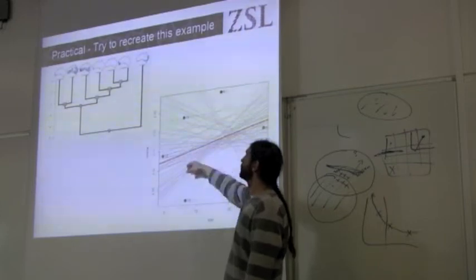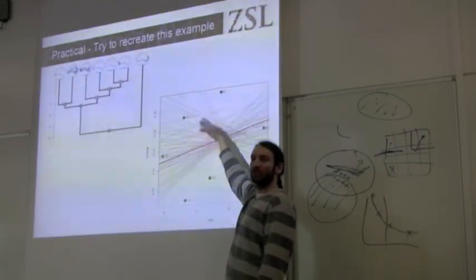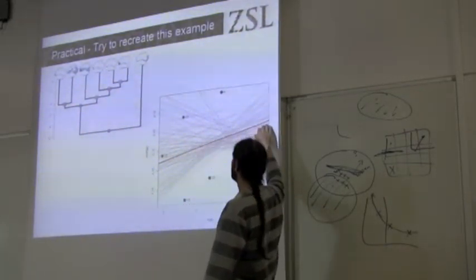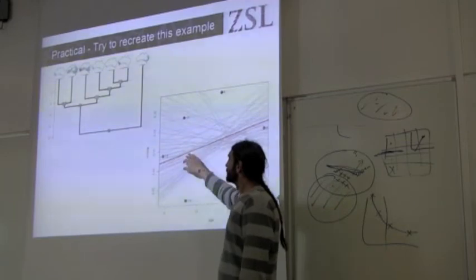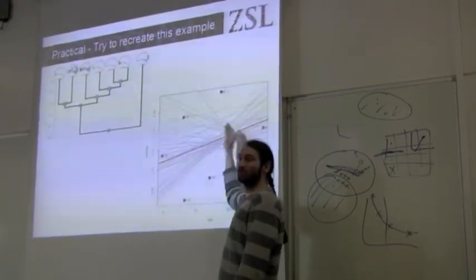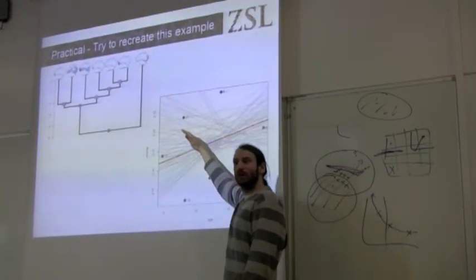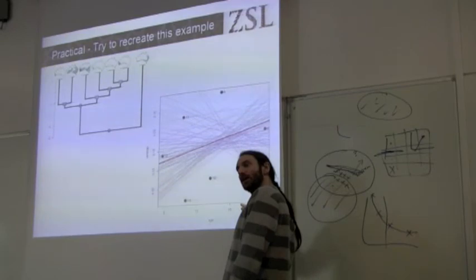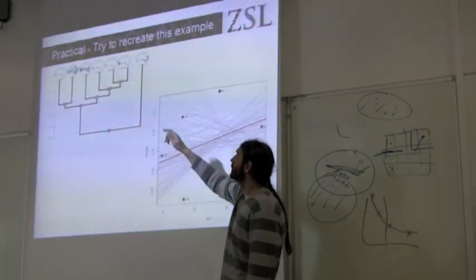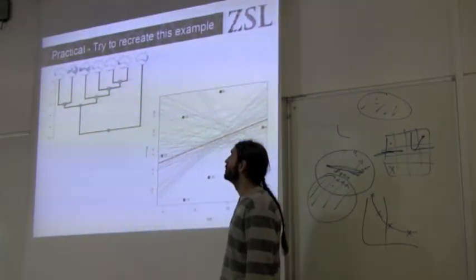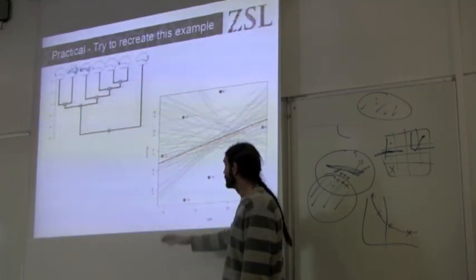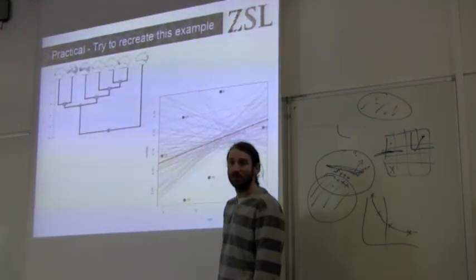The question is: is the observed pattern different from what we expect from just the random permutations of the observed niches in the phylogeny? The grey lines represent each of the randomizations, and we can see that this is not significant and doesn't show our expected pattern. So here we say there's no niche conservatism based on this test.